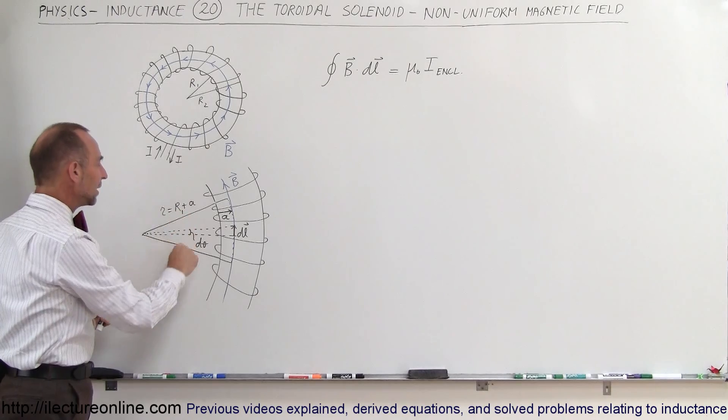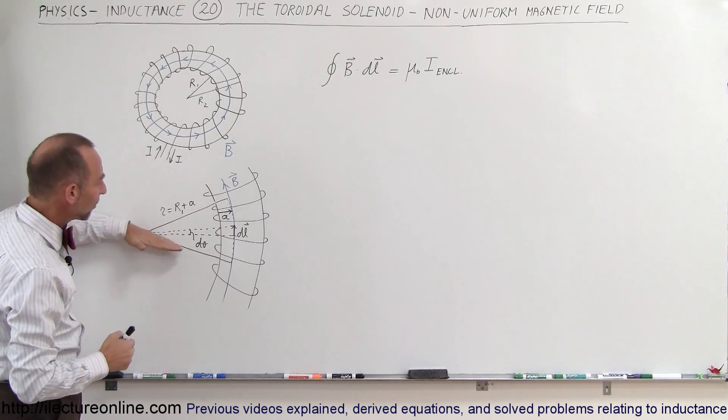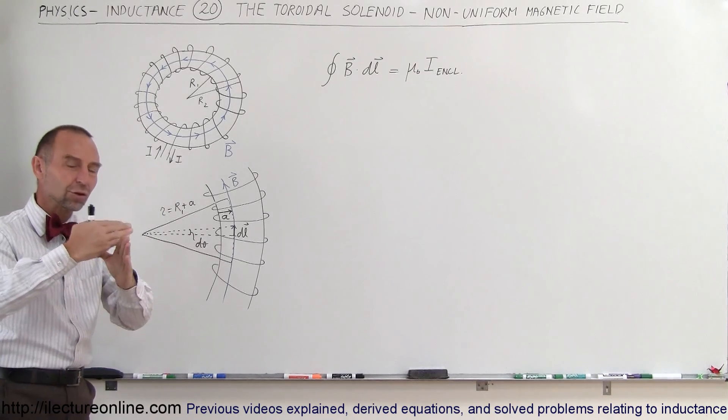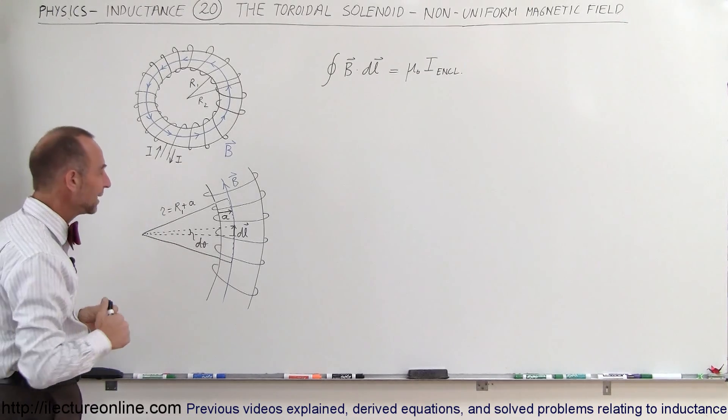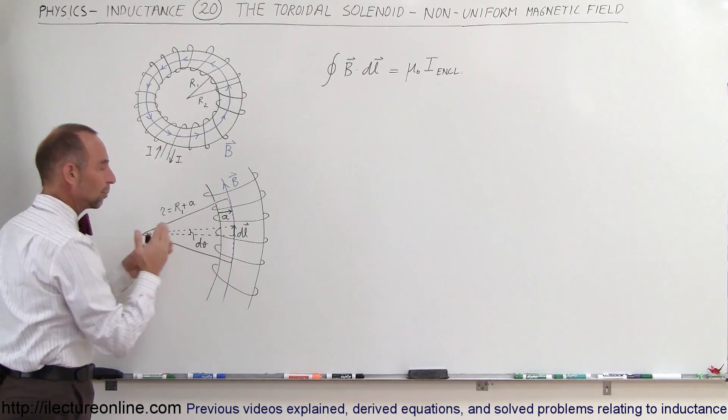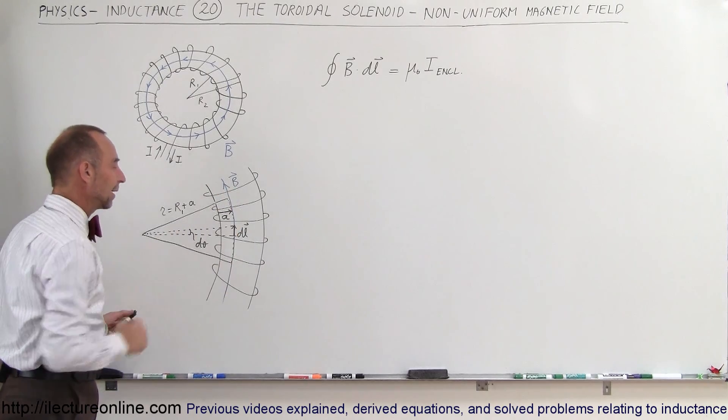And notice that these two legs of the integral will not contribute to the magnetic field because they are parallel to the current. Any time you have a path parallel to the current it doesn't cross the current like that there is no magnetic field effect. Only here where it crosses the current it's perpendicular to the current therefore we're going to have a magnetic field right there at that location.